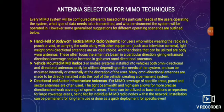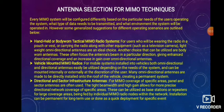Regarding antenna selection — every MIMO system will be configured differently based on the particular needs of the users. Some generalized suggestions for different operating scenarios are: first, handheld or body-worn tactical MIMO radio systems, for users wearing the radio in a pouch or vest, where lightweight omni-directional antennas are an ideal choice, and body-worn antennas can also be used. Second, vehicle-mounted MIMO radios for mobile systems installed in vehicles, where both omni-directional and directional antennas can be fitted. Third, directional and sector infrastructure antennas, where panel and sector antennas are often used for MIMO coverage of a specific area.